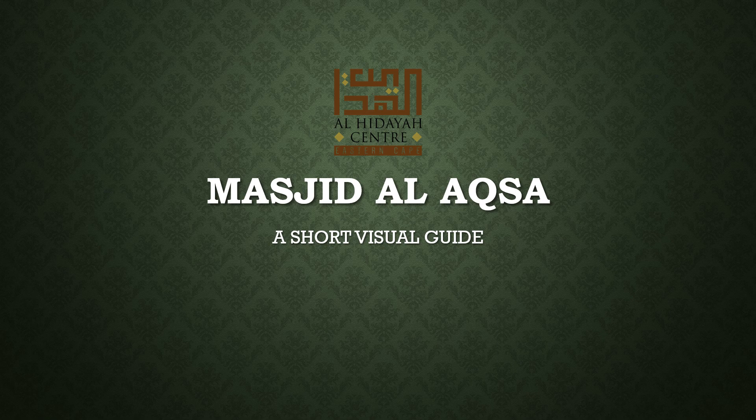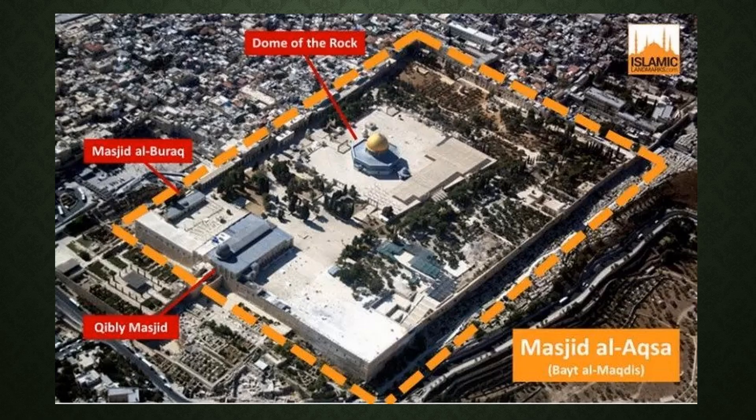What is Masjid al-Aqsa? It is a compound comprising 144,000 square meters, which includes within it many masjids like the Dome of the Rock and the Qibli Masjid. You will see trees growing there, paved walkways, and all these are surrounded by massive walls, most probably built by King Herod.